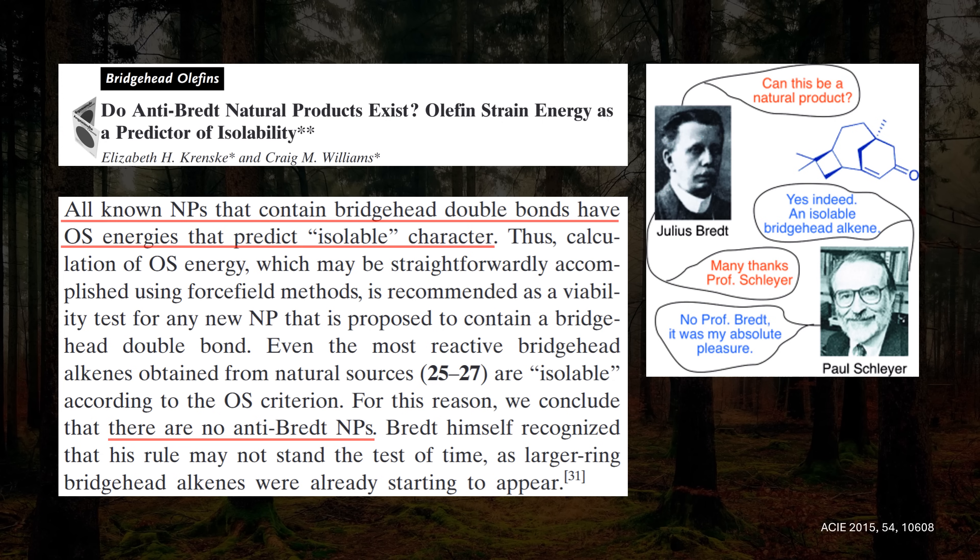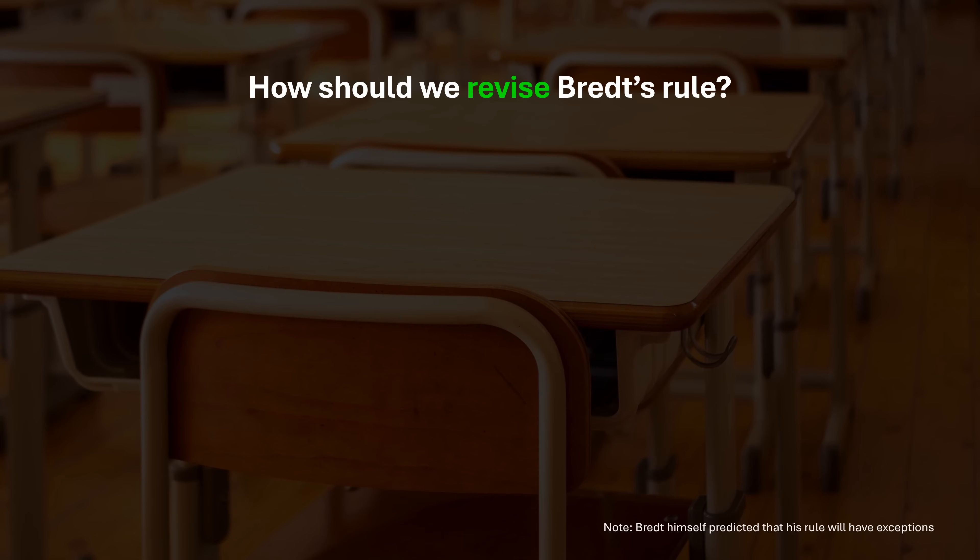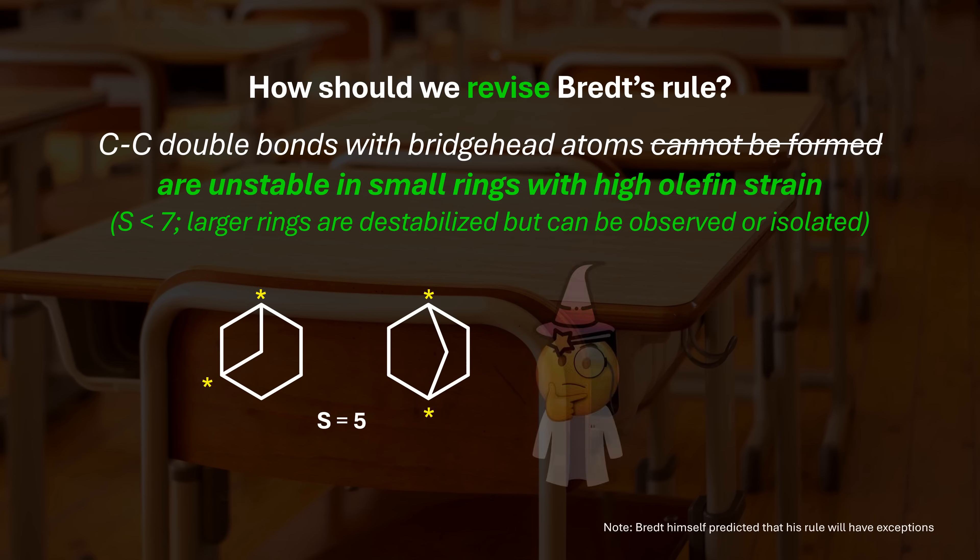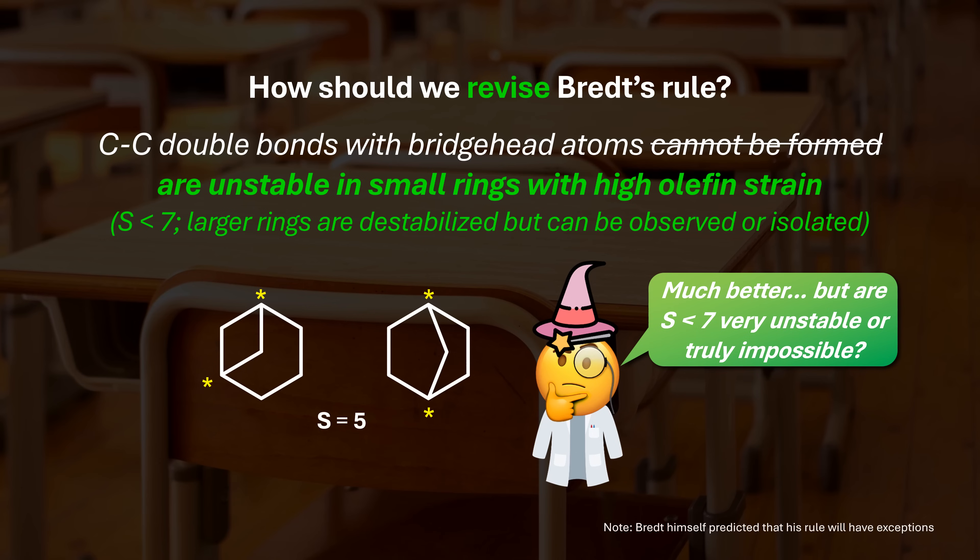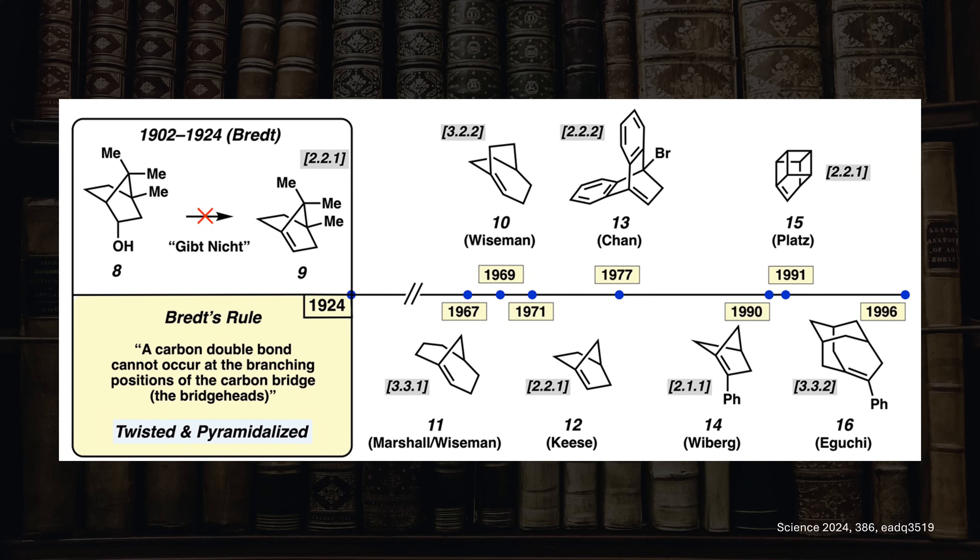This means we need to evolve our understanding of Bredt's rule. First, it loses its relevance for rings with high S-values or low olefin strain. Second, even the smaller ring olefins are not categorically inaccessible. But how can we tell if it's impossible to form these or if they are simply very, very unstable? Well, over the last decades, chemists brought forward clear evidence for these anti-Bredt olefins, even ones with S-values below 7.